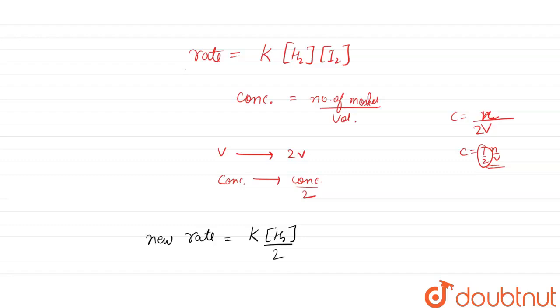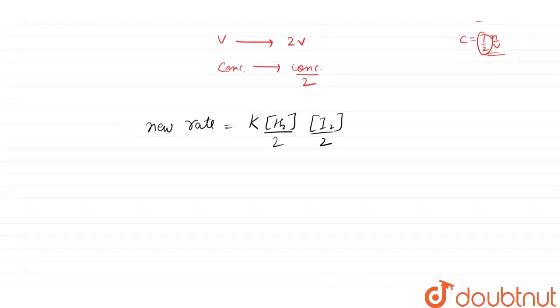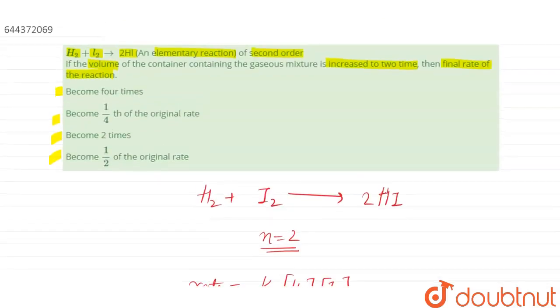This becomes half times half, so the new rate will be K times concentration of H2 times concentration of I2, and this will be 1/4. So the new rate, or you can say final rate of the reaction, will become 1/4th of the original.